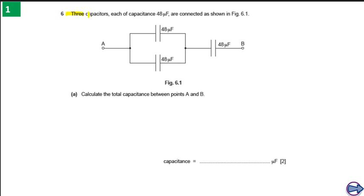Here is our first question. It is given that there are three capacitors and each capacitor has a capacitance equal to 48 microfarads, meaning they are identical capacitors. We need to find the total capacitance between points A and B.